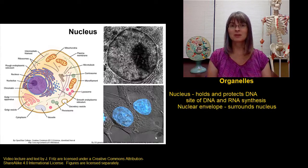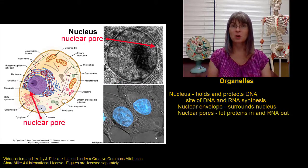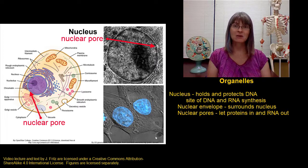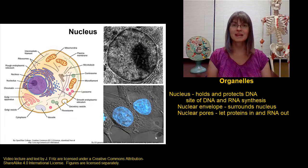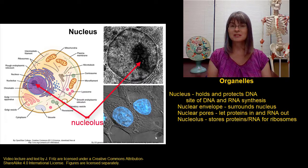The membrane around the nucleus is the nuclear envelope. The nuclear envelope has pores, or small openings, that allow proteins to get in to carry out the functions of replication and transcription, and to let the RNA back out in order to make proteins. This dark area of the nucleus is the nucleolus, which stores proteins and RNA needed to make ribosomes.